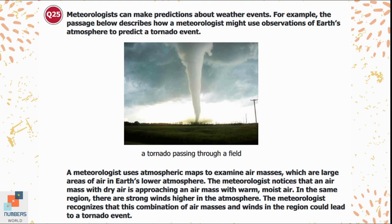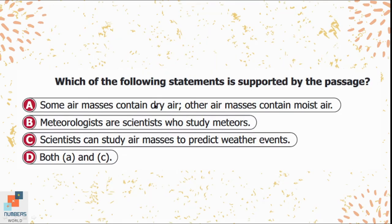Question 25: Meteorologists can make predictions about weather events. A meteorologist uses atmospheric maps to examine air masses. The meteorologist notices a dry air mass approaching a warm, moist air mass, with strong winds higher in the atmosphere — this combination could lead to a tornado event. Which statement is supported by the passage? Both option A — some air masses contain dry air, others contain moist air — and option C are supported by the passage, so option D is the correct choice.